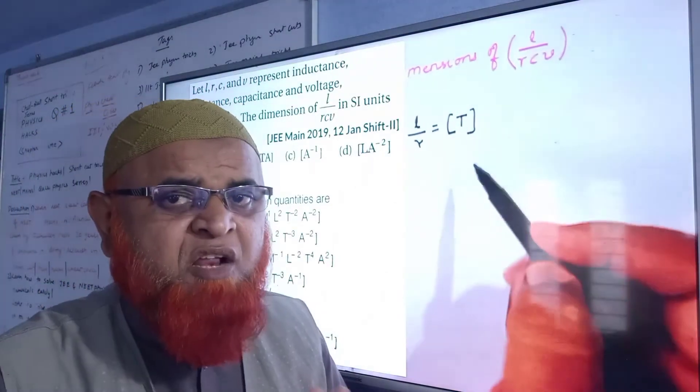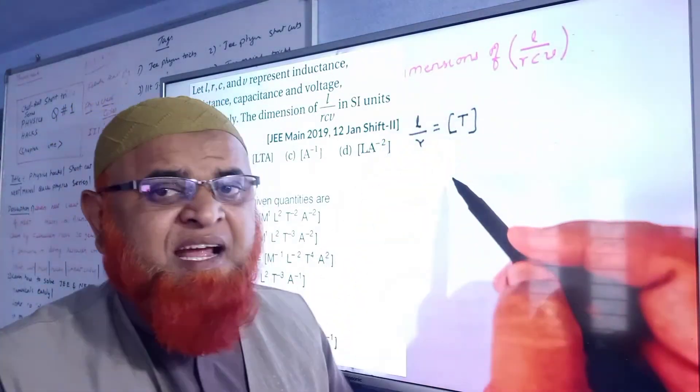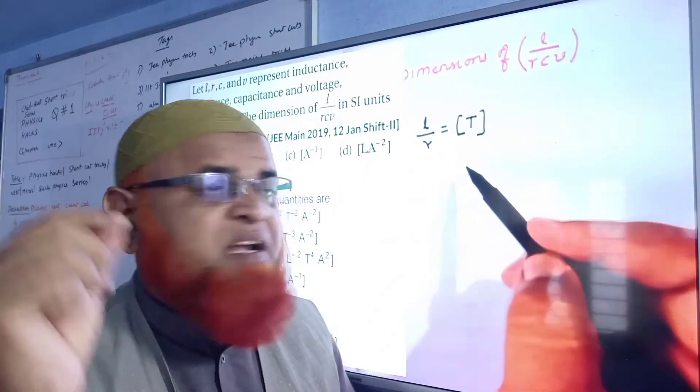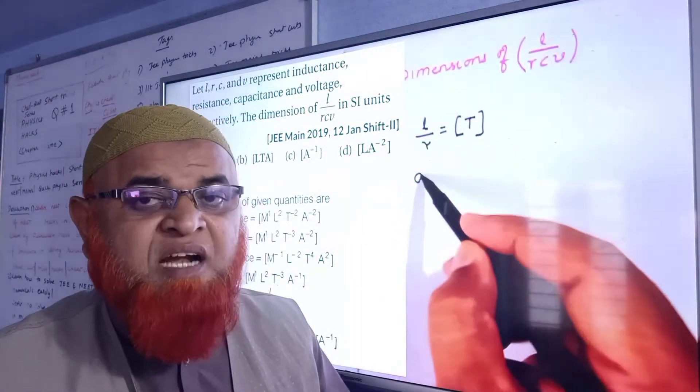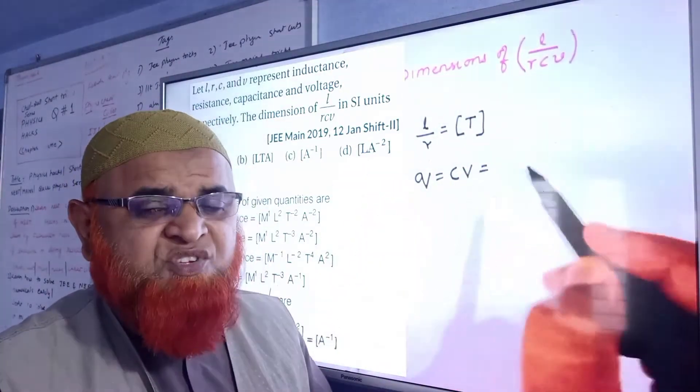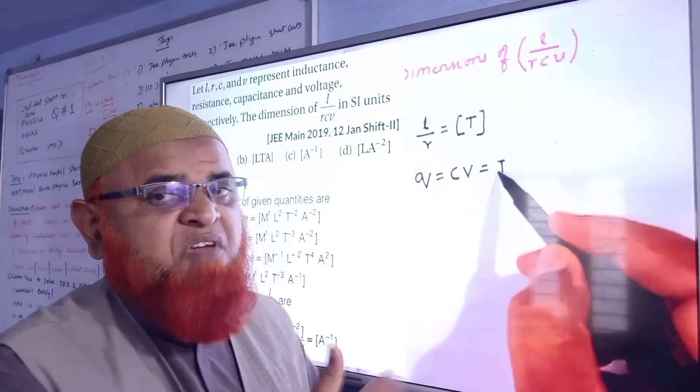So L/R can be taken as time period according to the chapter called alternating currents. L/R is nothing but time period. CV represents quantity of charge. Charge is represented with CV.